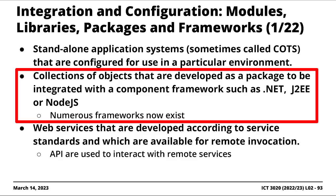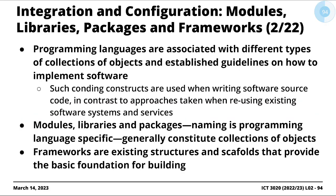Simply put, when it comes to these collections of objects, we're looking at existing code constructs that we reuse as we are programming, when we're writing source code. It's different from standalone applications — there's very little programming involved there; the reuse is specific, just configuring or modifying an existing application. In this case, we're looking for specific code constructs: modules, packages, libraries.